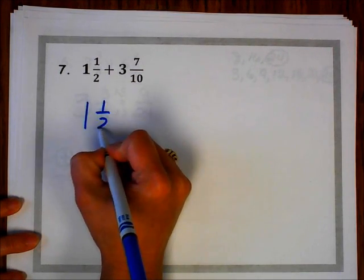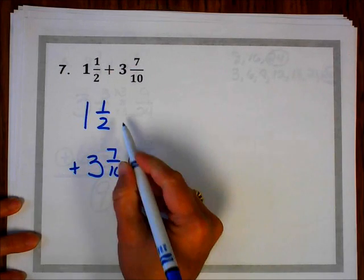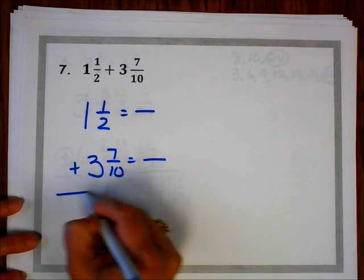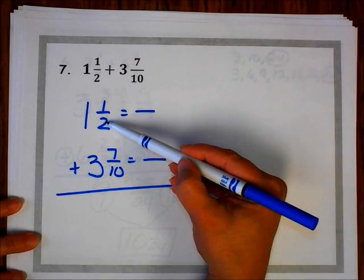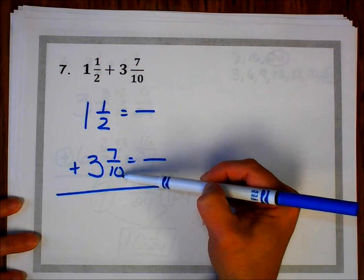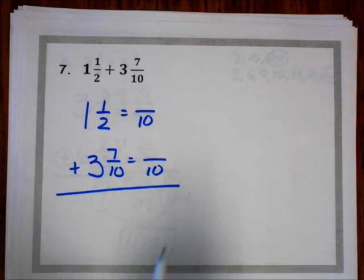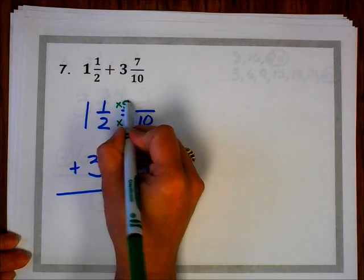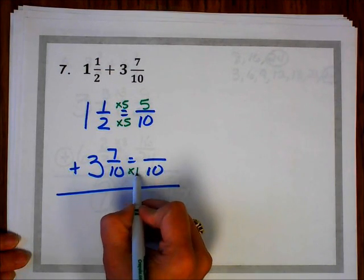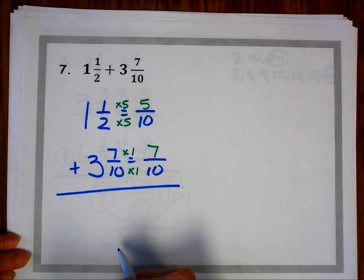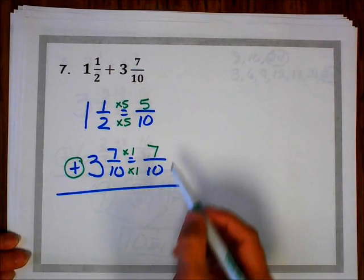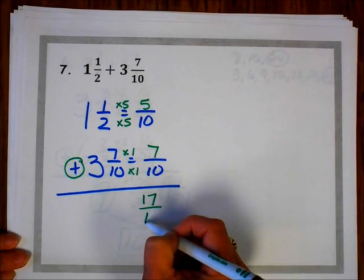I want you to try number 7 on your own. Hit pause. When you're finished, hit play again to check your work. Let's check your work. We had 1 and 1 half plus 3 and 7 tenths. Your denominators were not the same, so you had to find a common denominator. I know that if I count by 2s, I will get to 10 because 2 times 5 is 10, so my common denominator is 10. Now I need to write my equivalent fractions: 2 times 5 is 10, so 1 times 5 is 5. 10 times 1 is 10, so 7 times 1 is 7. I check the operation and see it's addition, so 5 tenths plus 7 tenths is 12 tenths.